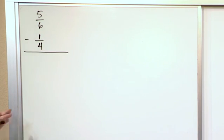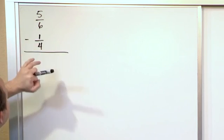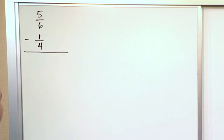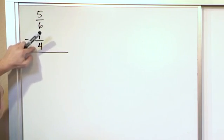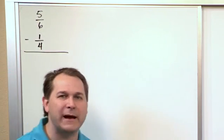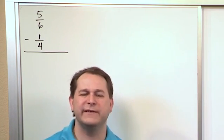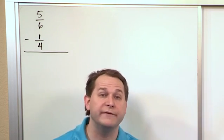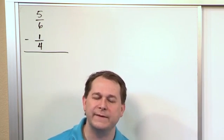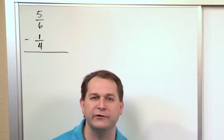Now the next thing we look at is can we transform one of these fractions, for instance this one, to put a 6 on the bottom of it. Well I can't multiply 4 times anything to give me 6. I also can't transform this fraction to make it match this one because I can't multiply 6 by anything to give me 4. So the first thing you do is always try to do the simple thing, see if you can just change one of those fractions. But we can't do that in this case.